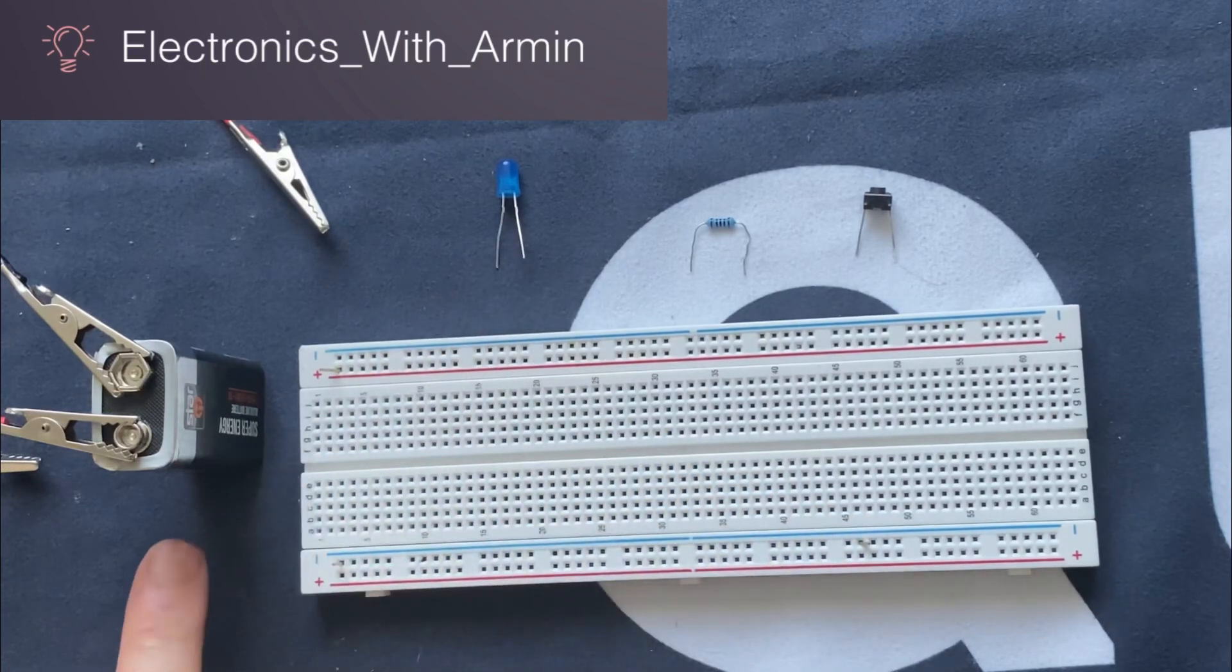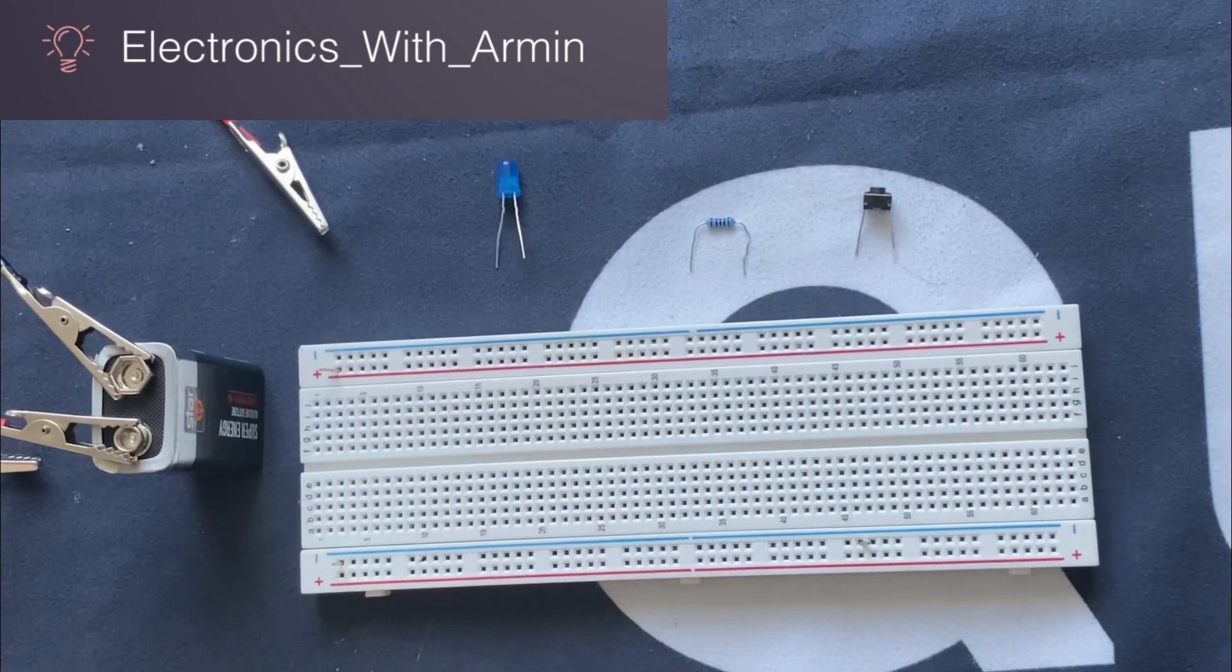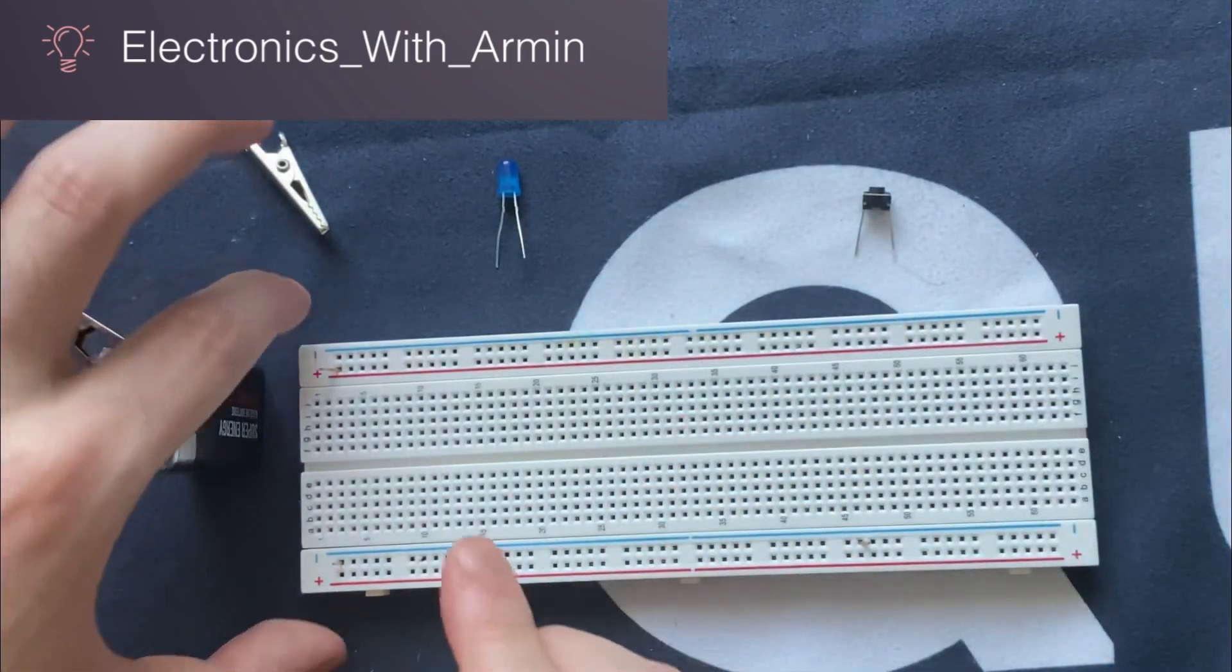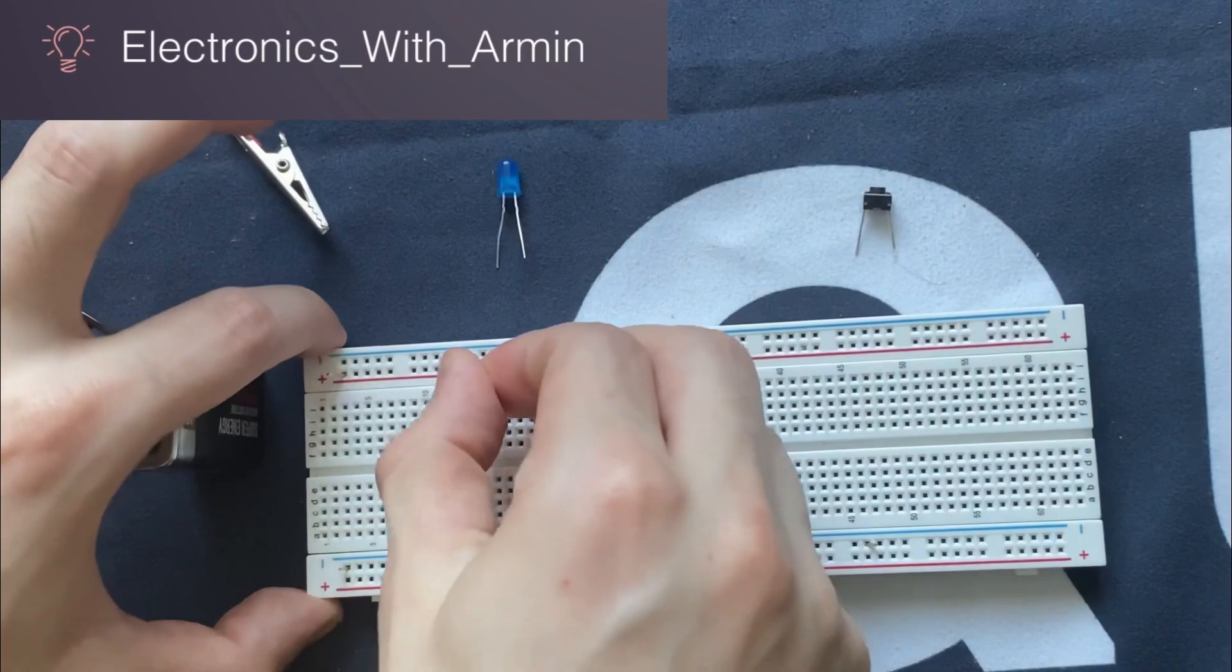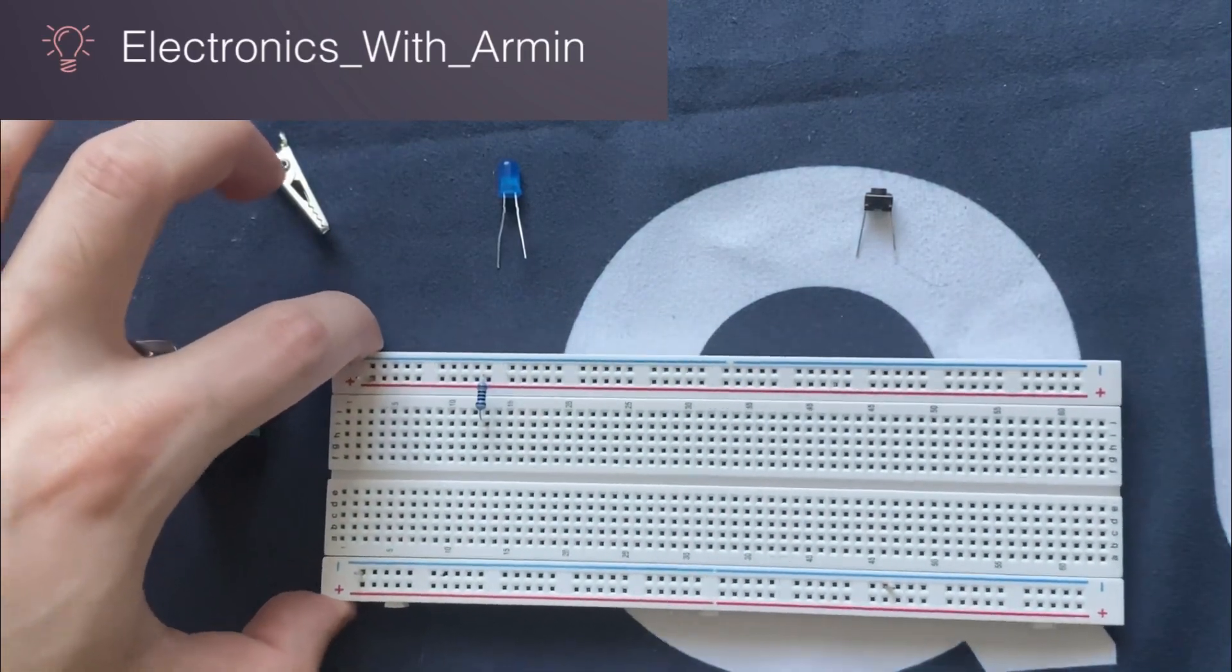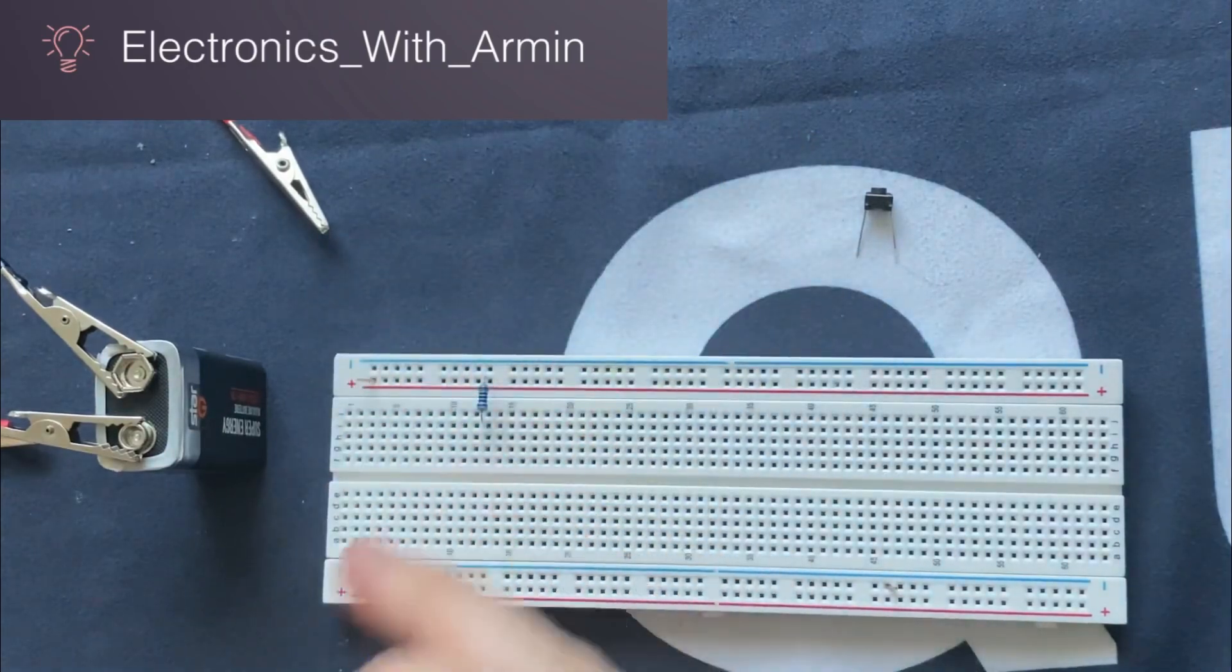9 volt battery and a breadboard. First of all, I'm going to connect the resistor to the positive rail of the breadboard, then I'm going to connect the LED to the resistor.